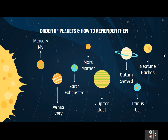You couldn't just say 'served us nine,' so you had to come up with a food that started with N — so nachos for Neptune. My = Mercury, Very = Venus, Exhausted = Earth, Mother = Mars, Just = Jupiter, Served = Saturn, Us = Uranus, Nachos = Neptune. The only two you'll struggle with are Mars and Mercury. I always remembered Mercury because Mercury just sounds hot to me, so Mercury is closest to the sun.